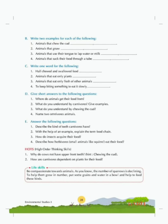Write two examples for each of the following. First: animals that chew the cud — cow and buffalo. Second: animals that gnaw — squirrel and rabbit. Third: animals that use their tongue to lap water or milk — dog and cat. Fourth: animals that suck their food through a tube — mosquito and butterfly.